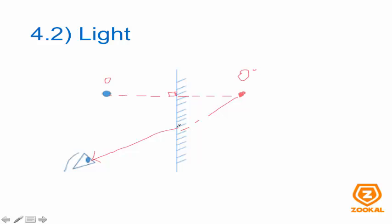For the incident ray, you simply draw a line from the object into the mirror at the point at which the ray comes out toward the object. This is the diagram to show how incident rays and reflected rays are drawn when you're looking at an object in the mirror.